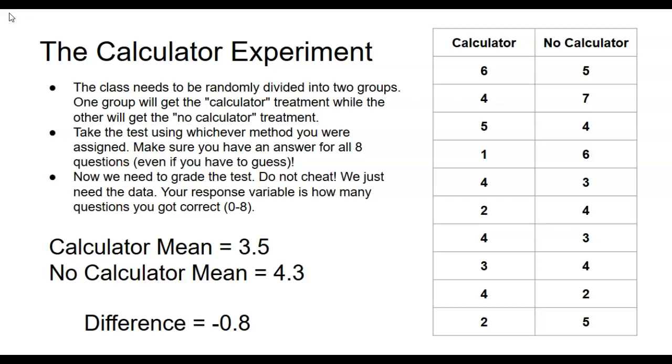Why was there a difference in the two averages if the calculator made no difference? Is this difference a significant difference? How could you even measure if it was significant?